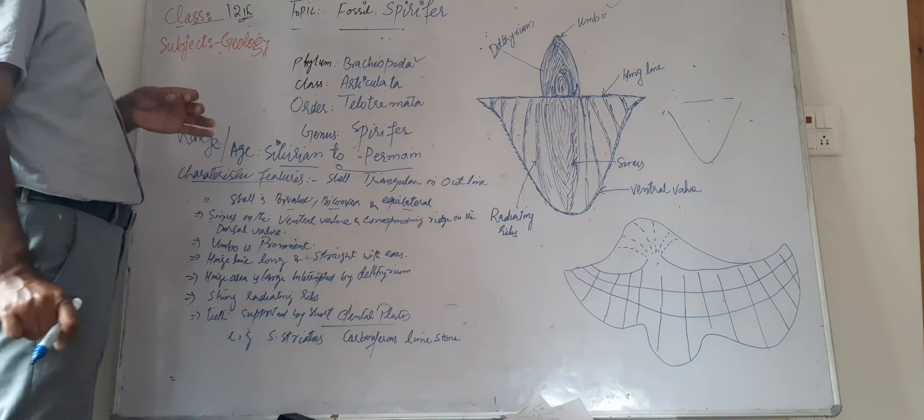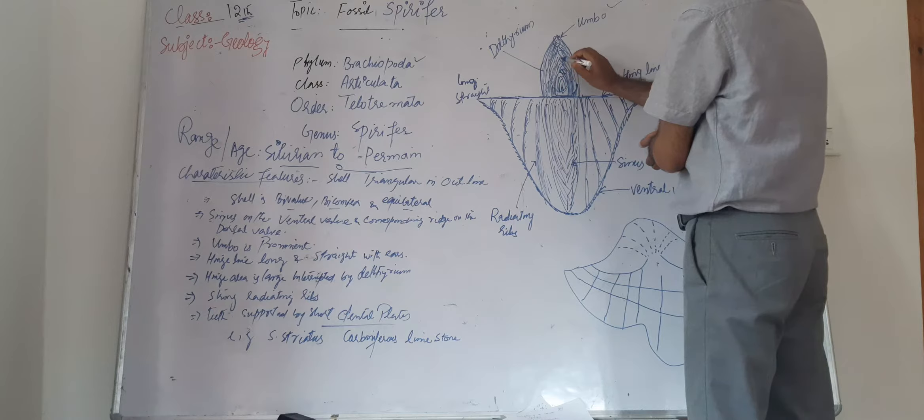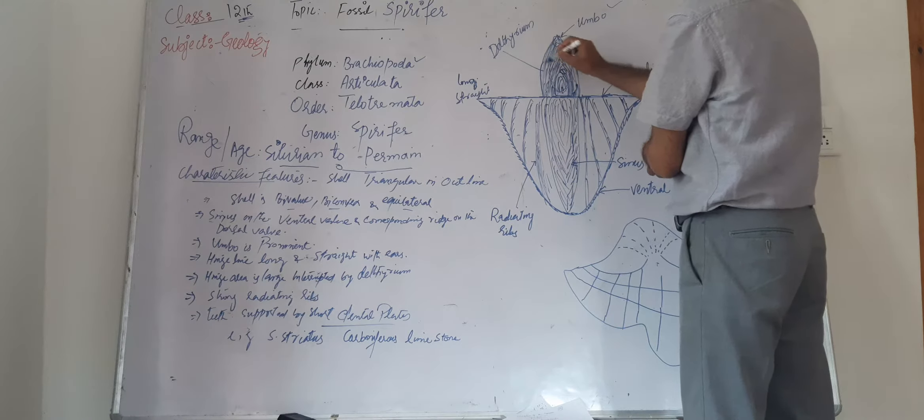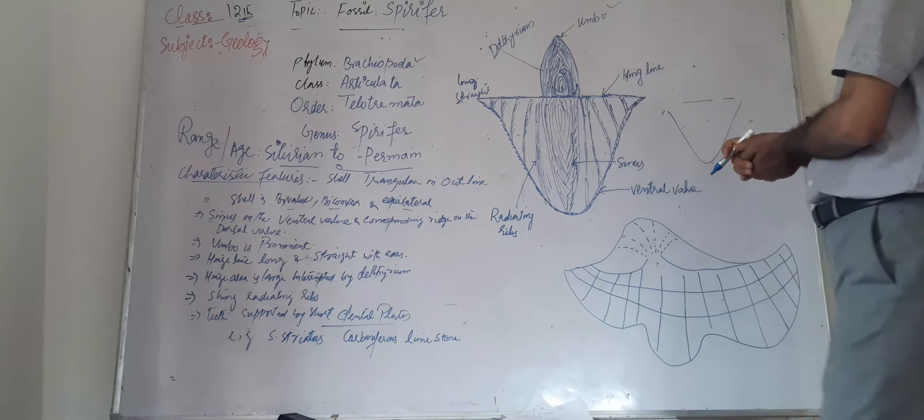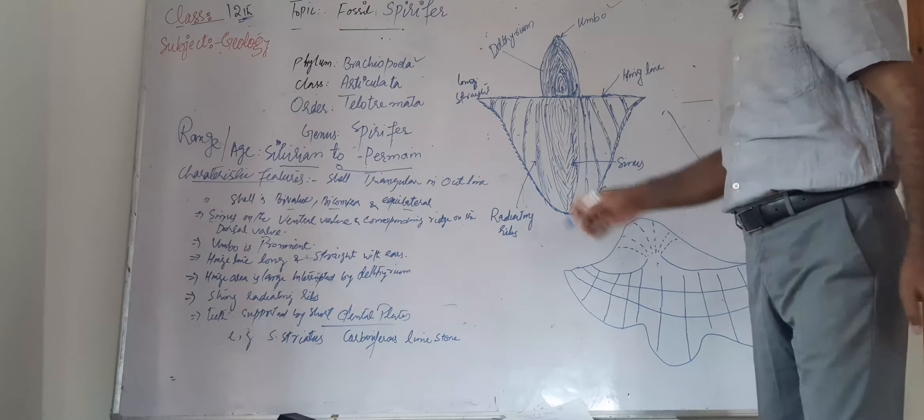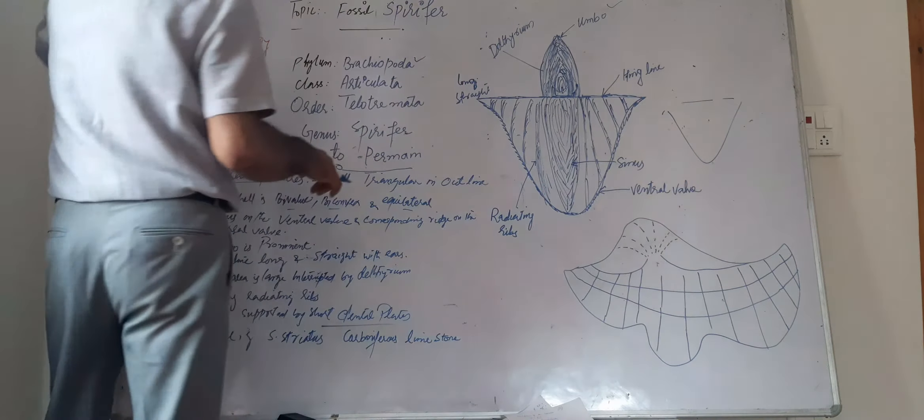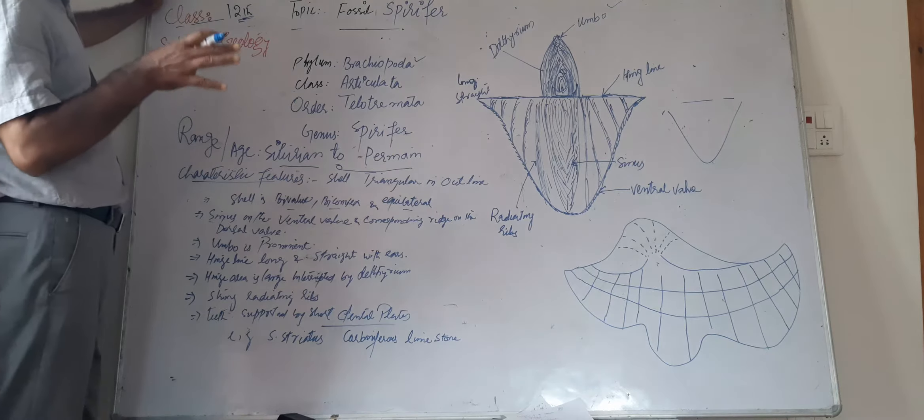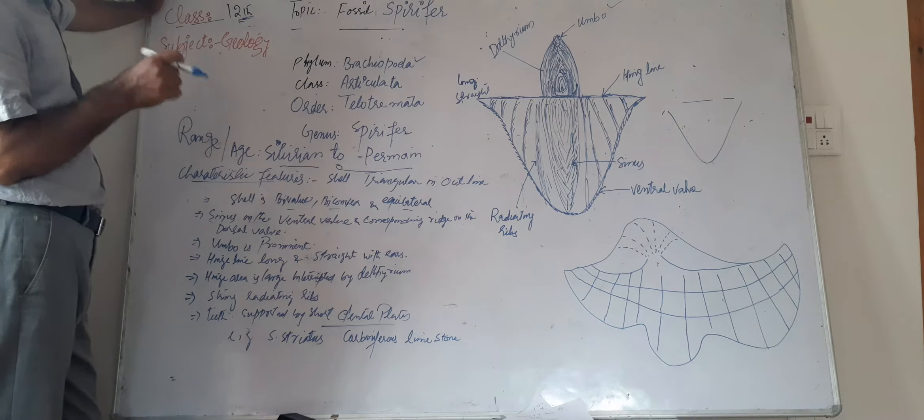Hinge line, or we can say the area between the hinge line and the umbo, is known as hinge area that is interrupted by deltarium. As you know, deltarium in Brachiopods is a place which is in between the umbo and the hinge line.